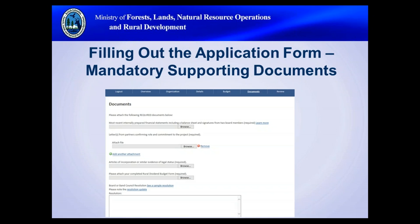Due to the timing of the application intake, many councils will not be meeting throughout the summer, so we have provided an exception to the resolution requirement until August 31st. If you do not have your resolution by the July 31st deadline, identify in the form that it will be forthcoming and include the date it will be emailed to the program. The budget form is a key part of the application and must be completed using the template available on the Rural Dividend website.